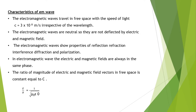The ratio of the magnitude of electric and magnetic field vectors in free space is equal to C. That is E/B = 1/√(μ₀ε₀). When we substitute the values of μ₀ and ε₀, we get E/B = 3 × 10⁸ meters per second, which equals C. This is the case for free space.